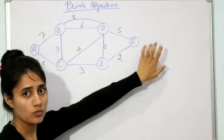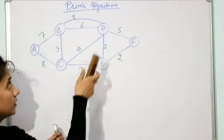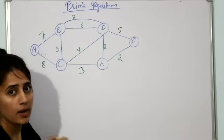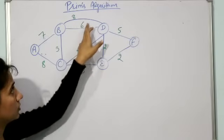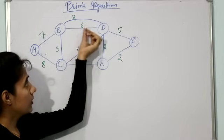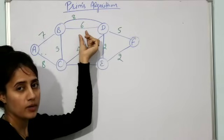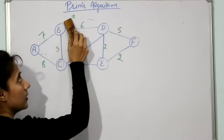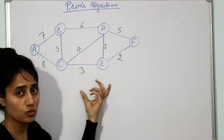Now the next step is to remove parallel edges. In this graph, from one vertex to another vertex you have two edges which are parallel. You have to remove those also. In this graph we have one pair of parallel edges — one with weight six and one with weight eight. You keep the edge with minimum weight, which is six, and remove the one with weight eight.